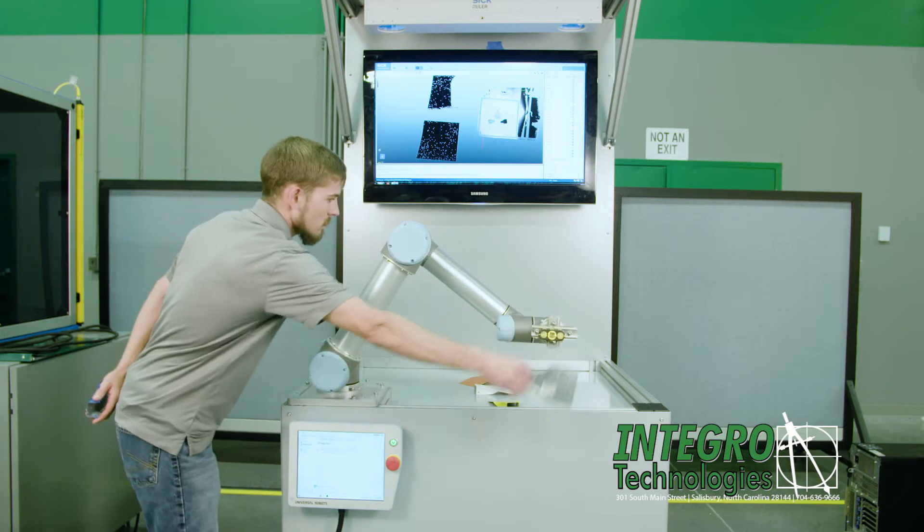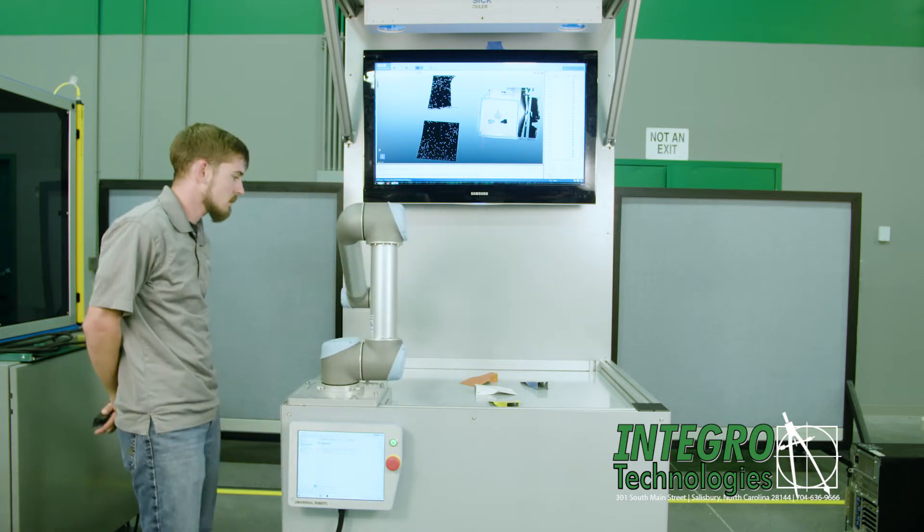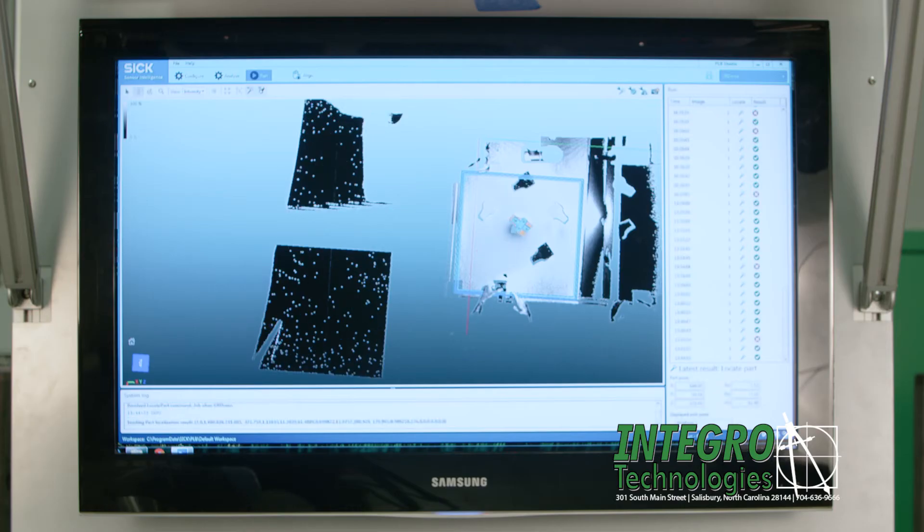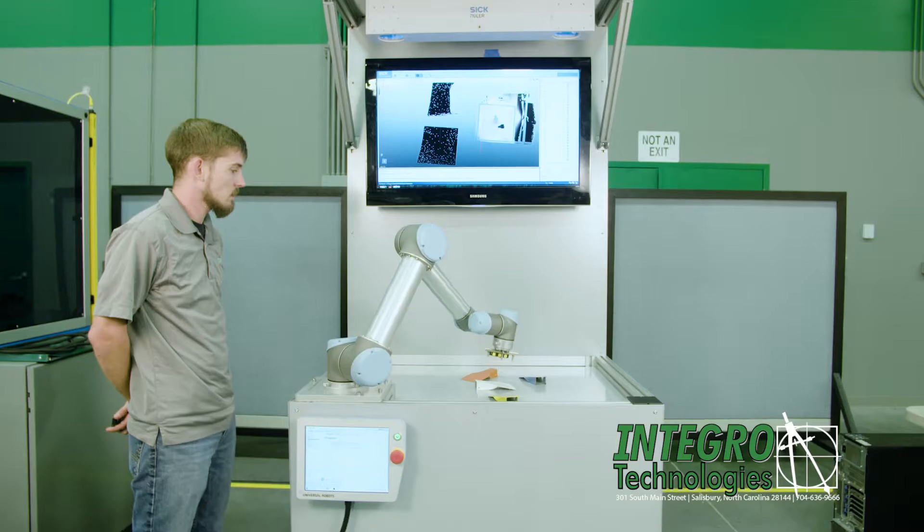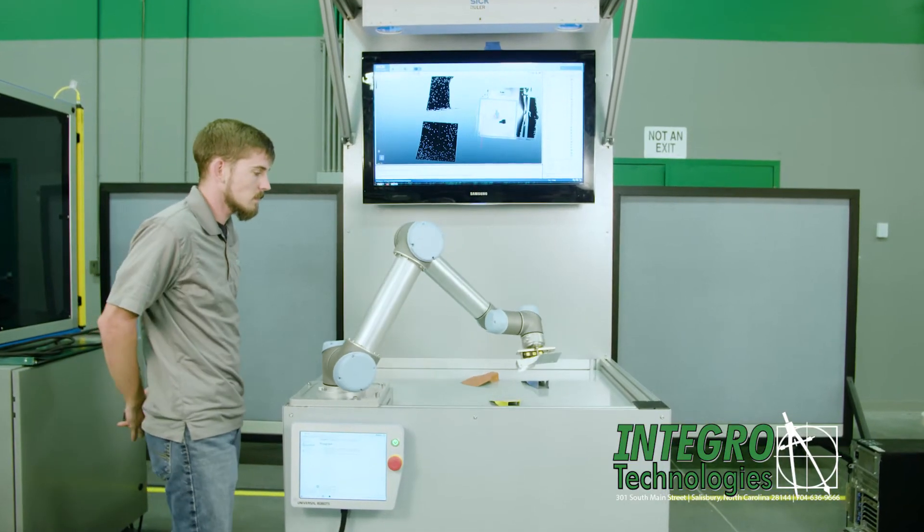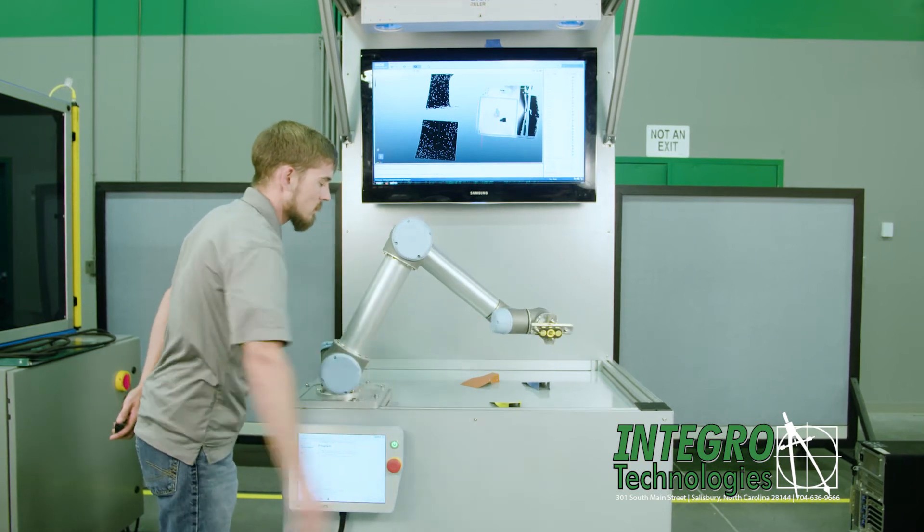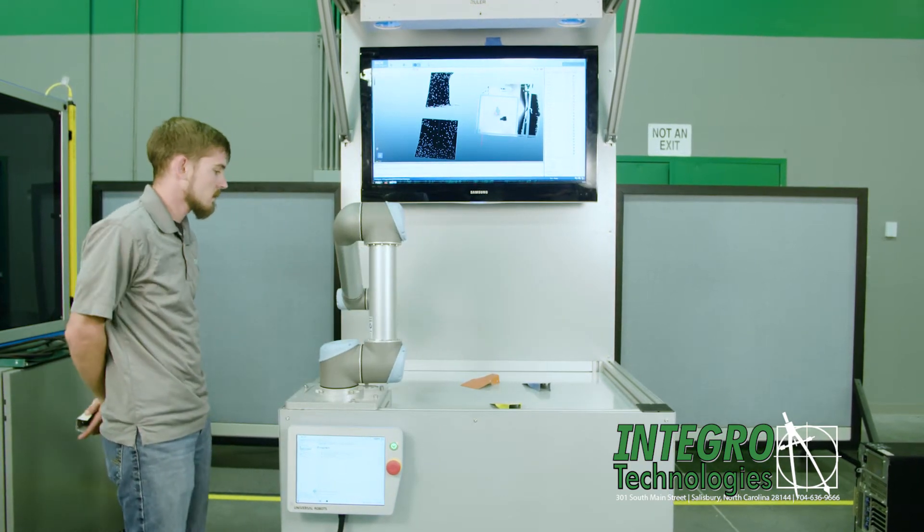The tabletop application utilizes Universal Robots' UR3 robot arm paired with a fixed mount SICK 3D sweeping laser topography system. The integrated system executes random bin picking on sheet metal parts with a reflective finish using a vacuum end effector.